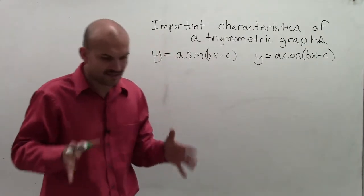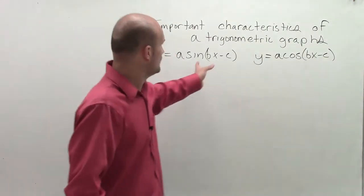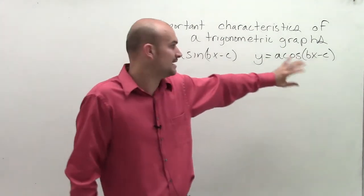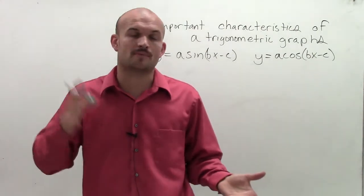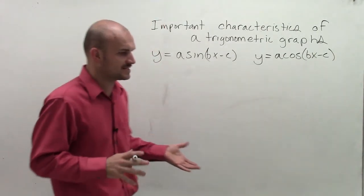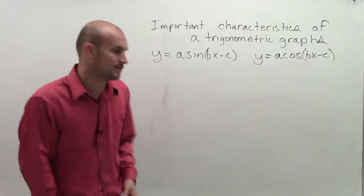So an important thing that we want to deal with, two of the main important things besides the transformations. We kind of talked about what c does, and if I was going to add or subtract a number outside the function, that's going to affect the graph up and down for translations. But what are some main important points we need to know for our trigonometric graphs?